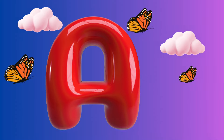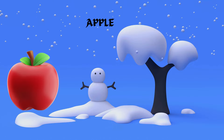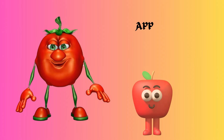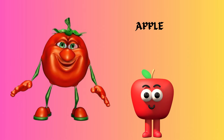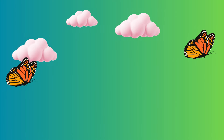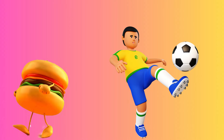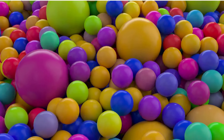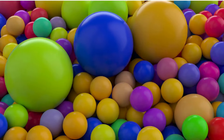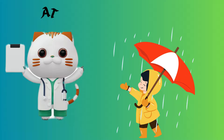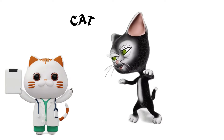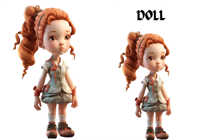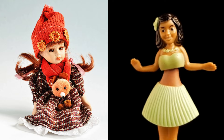A is for apple, a-a-apple. B is for ball, b-b-ball. C is for cat, c-c-cat. D is for doll, d-d-doll.